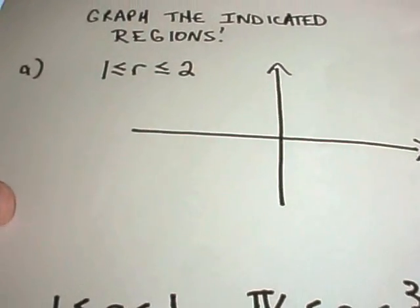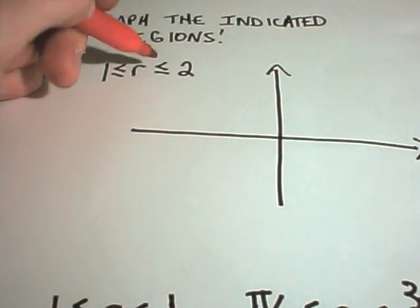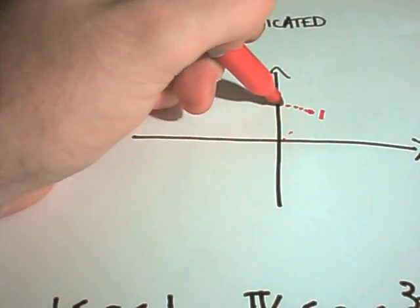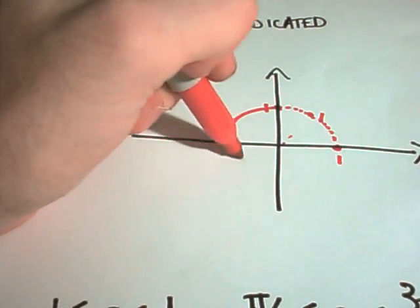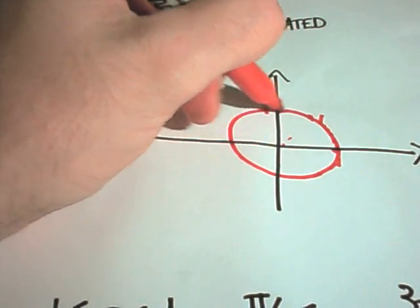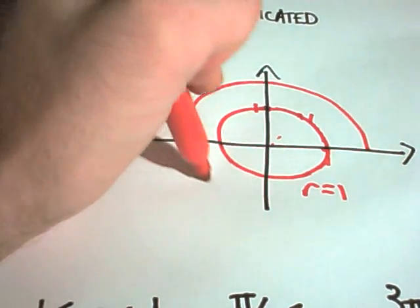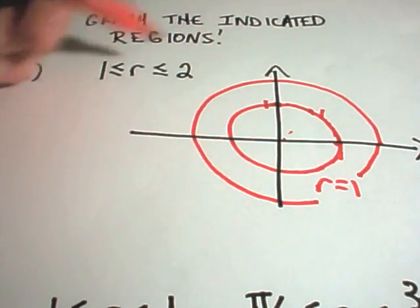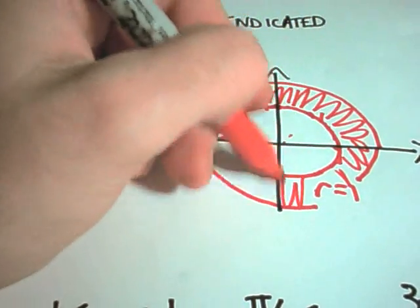So before I run out of time, let me do a couple of graphs here real quick. In the first one it says we want r to be in between positive 1 and positive 2. Well basically it says you go at a distance of 1 and it doesn't really matter where the angle is just so long as the radius is 1. So that's actually going to trace out a circle of radius 1. So here's r equals 1. Likewise, r equals 2 is just going to be a bigger circle.